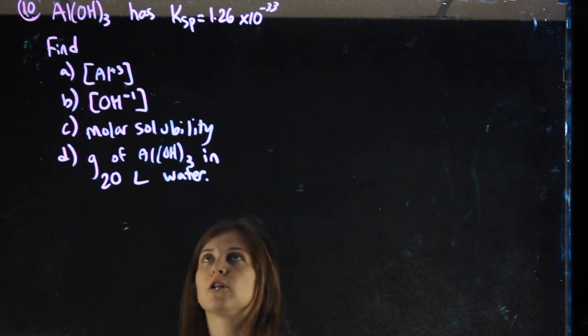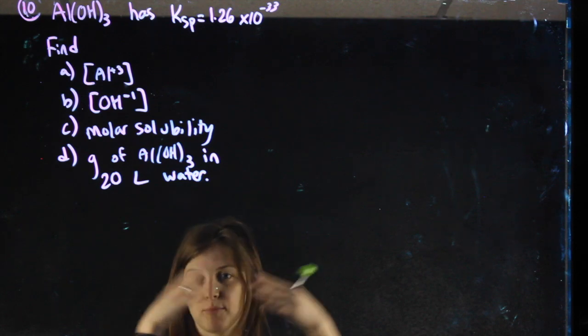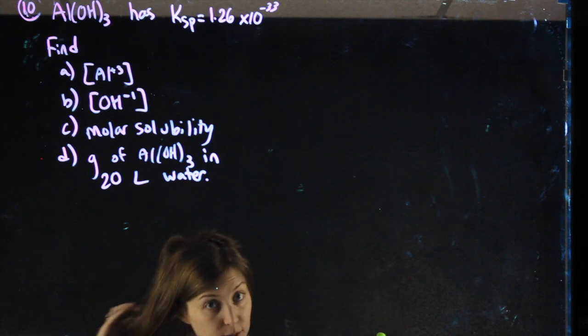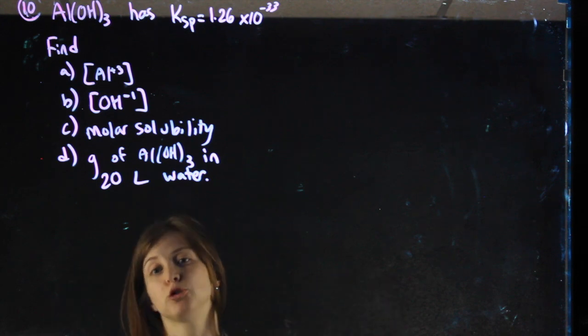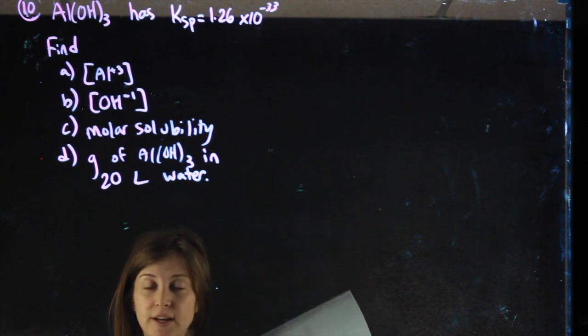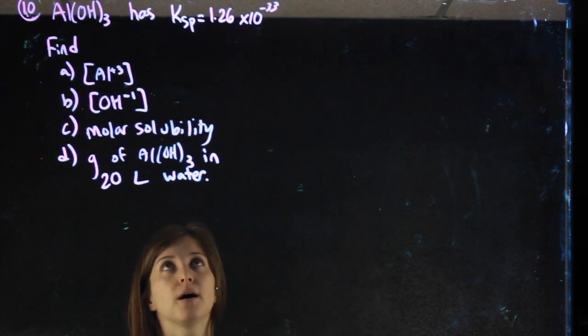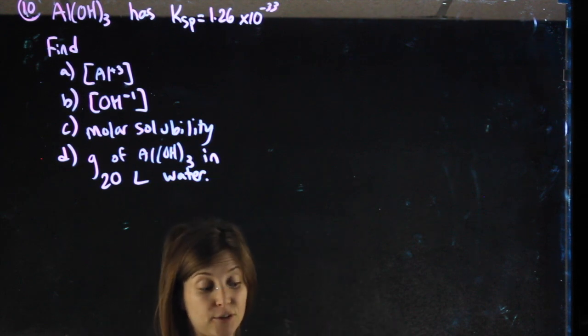Alright, this question tells you aluminum hydroxide has a KSP of 1.26 times 10 to the negative 33. If I don't give you the KSP and just say we're talking about a solution of aluminum hydroxide, you'd be able to use your chart to find the KSP value. For this one I just made it so you don't even need to have your chart with you.